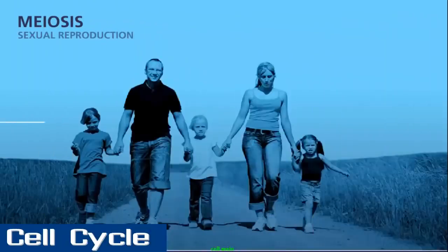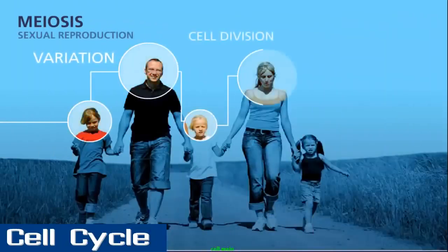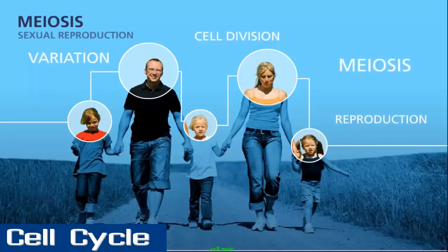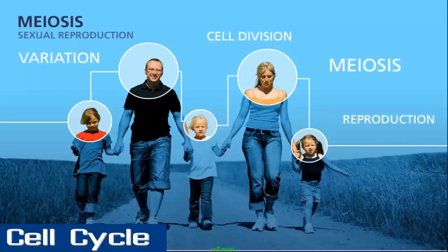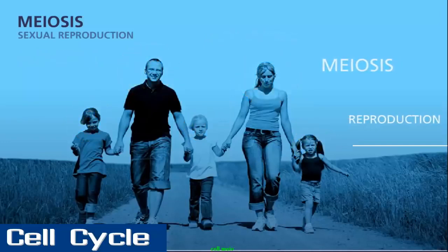Have you ever wondered why children do not look exactly like their parents, or why some siblings look so different from each other? The answer lies in the process of meiosis, which generates the gametes for reproduction.